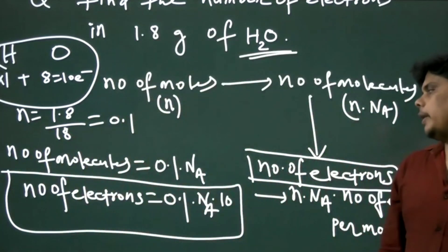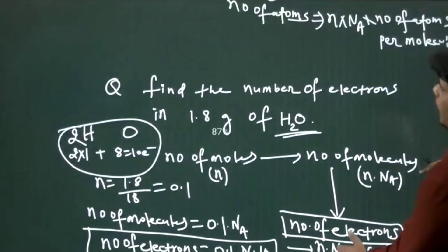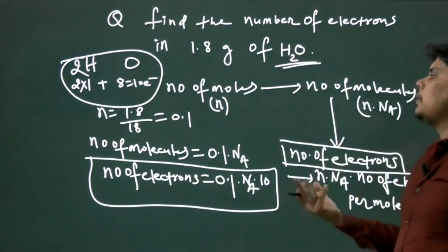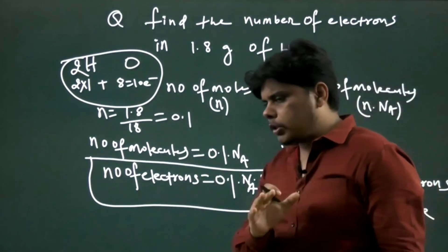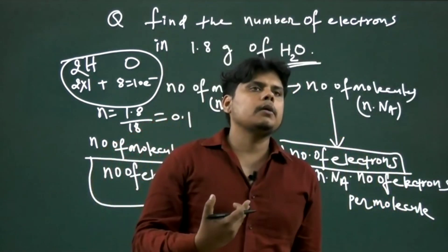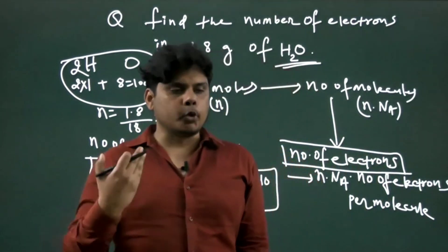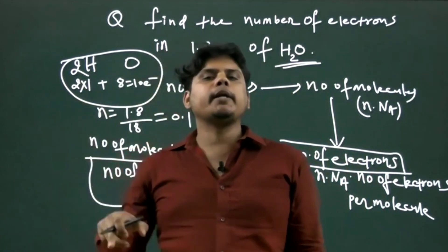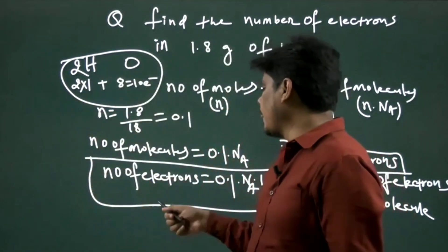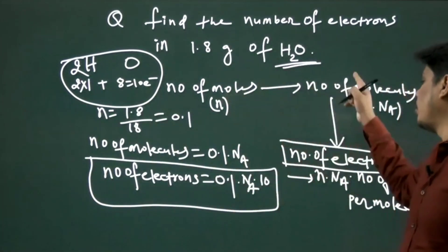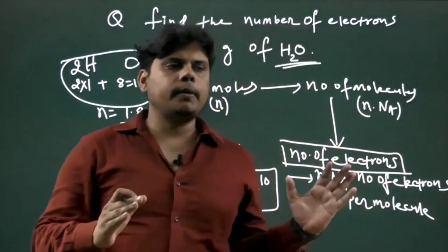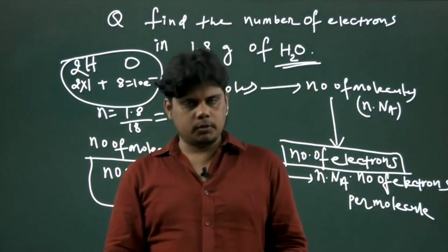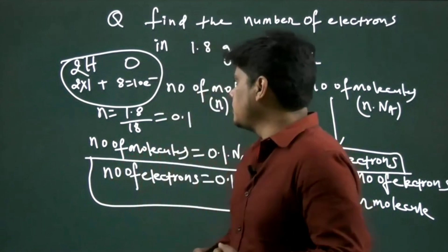The correct answer is 0.1 × Nₐ × 10. The message is clear: to find number of moles → molecules → electrons (or protons or neutrons), you don't need to find atoms in between. The flowchart applies to all: moles → molecules → electrons, moles → molecules → protons, moles → molecules → neutrons.